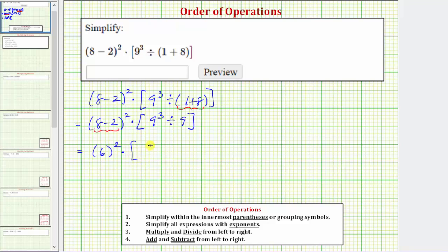Now simplifying inside these brackets, we have an exponent and we have division. We simplify the exponents before we divide. Nine cubed is equal to nine times nine times nine, which equals seven hundred twenty-nine. So inside the brackets we have seven hundred twenty-nine divided by nine.